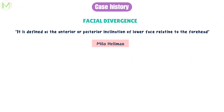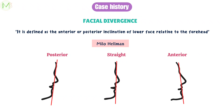Now let's look at facial divergence. Facial divergence is defined as the anterior or posterior inclination of the lower face relative to the forehead; it was described by Milo Hellman. It is classified into three types: straight or orthognathic, anterior divergence and posterior divergence. In orthognathic cases, the line between the forehead and chin is straight or perpendicular to the floor. In anterior divergent cases, the line is inclined anteriorly towards the chin, and this is seen in Class III malocclusion. In posterior divergent cases, the line slants posteriorly towards the chin, seen in Class II malocclusion.